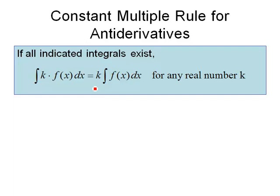So if all indicated integrals exist, the antiderivative of a constant k times a function f of x dx is simply k times the antiderivative of f of x, where k is any real number.